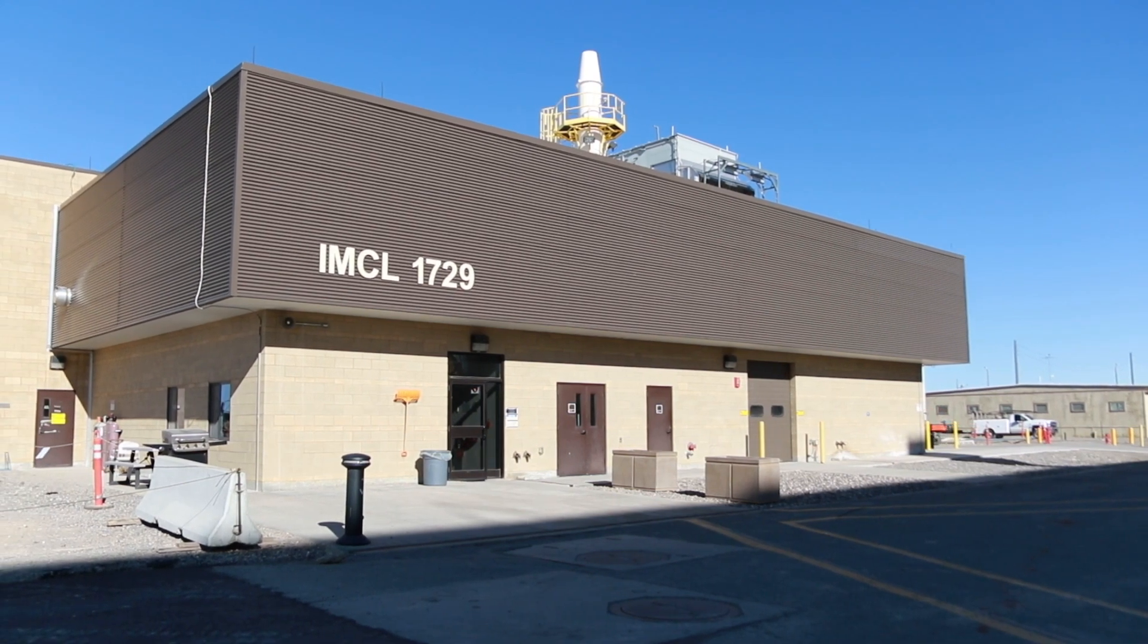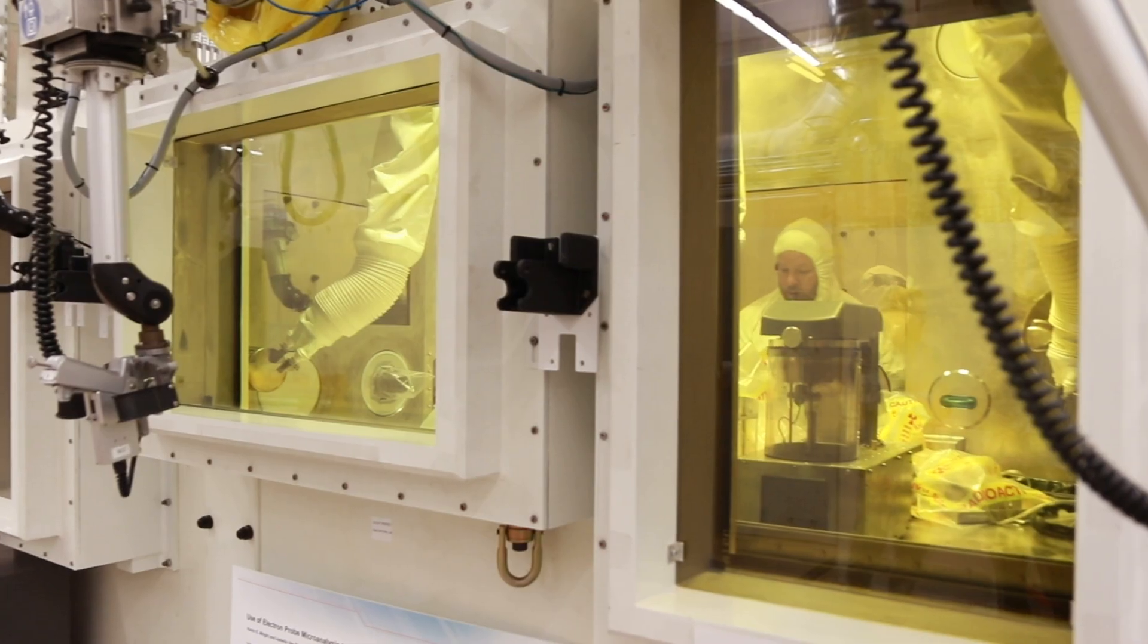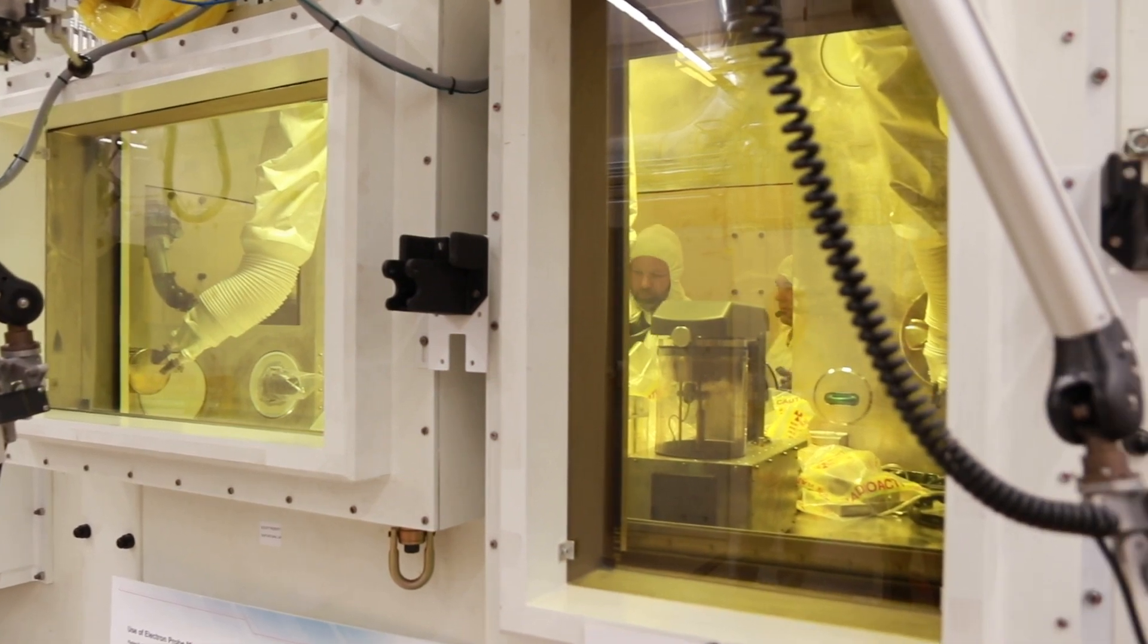Idaho National Laboratory was formed in 1949 as a national reactor testing station, and it was here where Enrico Fermi's dream was realized and the first production of electricity from nuclear power occurred.